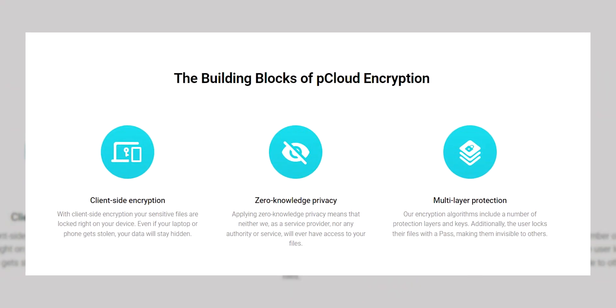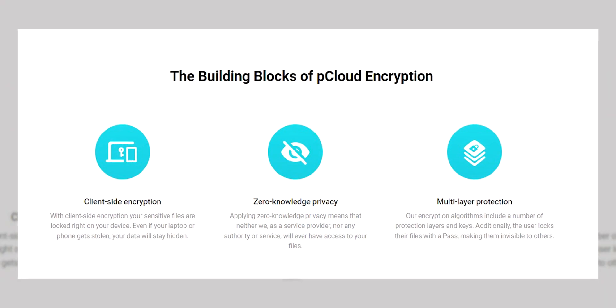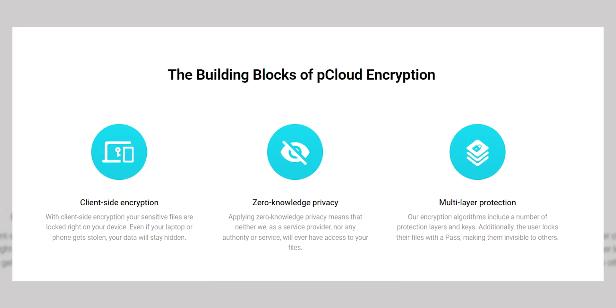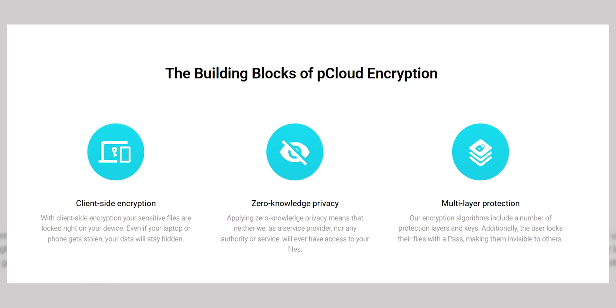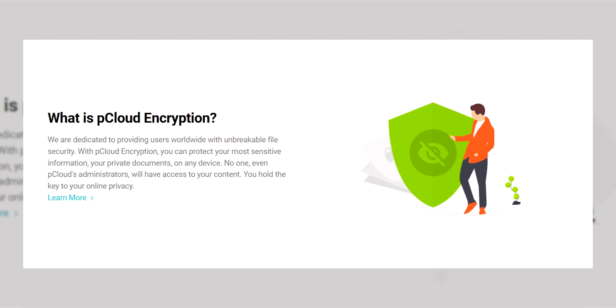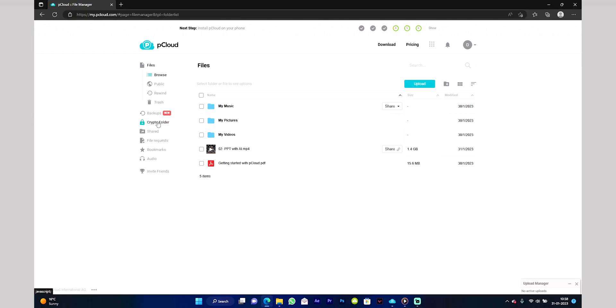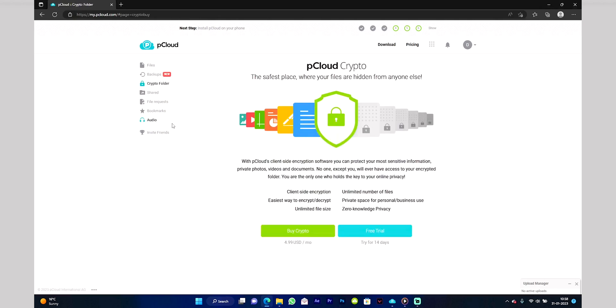Coming down to privacy — here we get zero-knowledge encryption. This means that you can encrypt your files and no one else would be able to see those files. Only you hold the keys, and no one would be able to decrypt those files, not even pCloud. So make sure to keep the key in a safe place. A drawback of this feature is that it is served as an add-on by pCloud, called crypto encryption. So if you want to avail this feature, you have to pay extra.